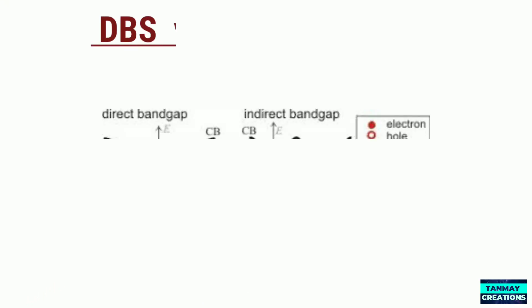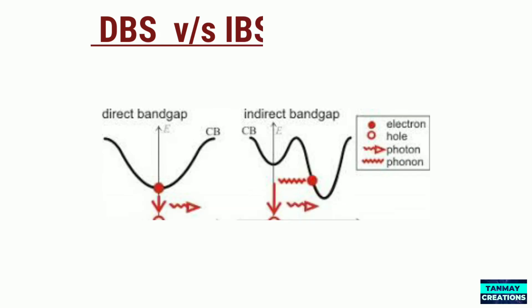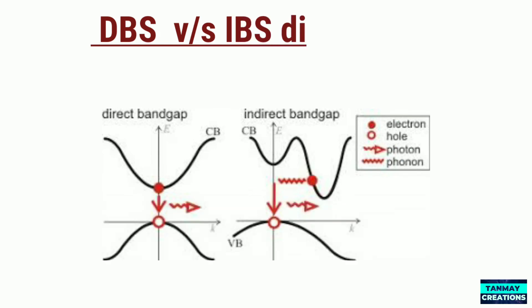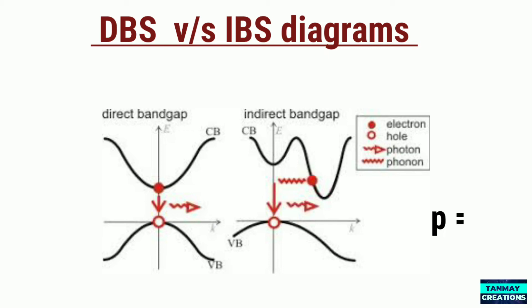This is how the EK diagram of a direct band gap semiconductor differs from that of an indirect band gap semiconductor. Note the involvement of a phonon in the indirect band gap semiconductor diagram. The involvement of three entities — an electron, a photon, and a phonon — makes the process much slower.